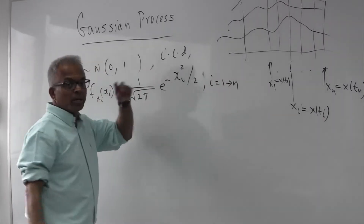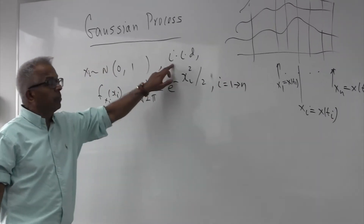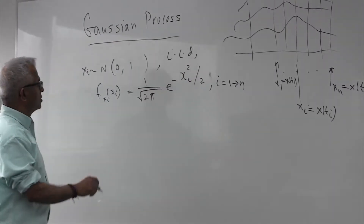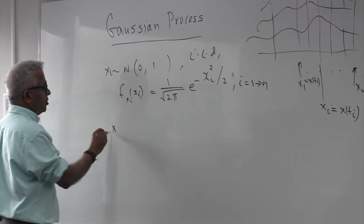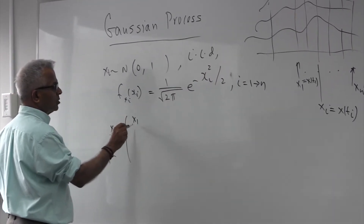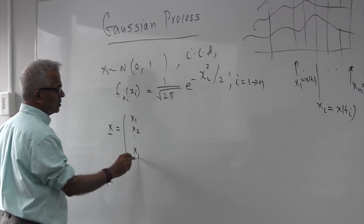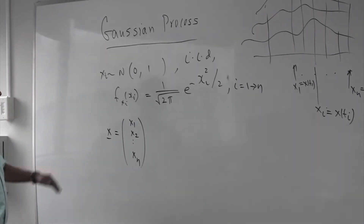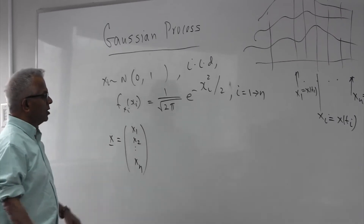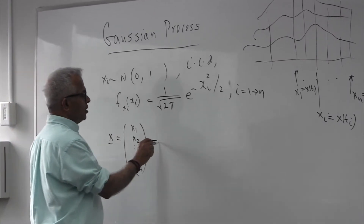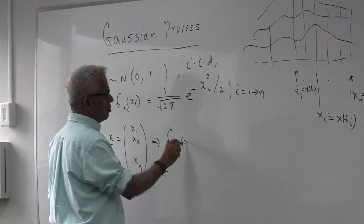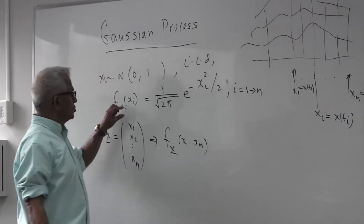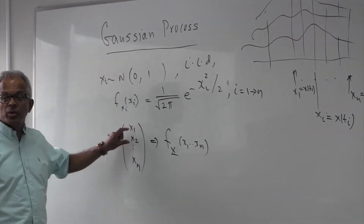I have n random variables that are independent and identically distributed. I'm going to define a vector x, which is x1, x2, through xn. Each of them individually has a Gaussian density. So their joint density function will follow from that.